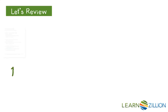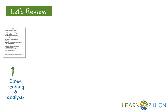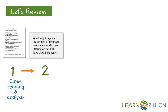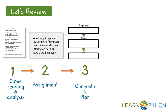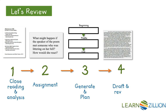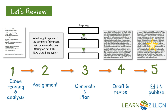The steps that we use in the writing process are: 1. A close reading and analysis of the text. 2. Read the assignment or writing prompt. 3. Generate and plan for our response. 4. Draft and revise our response. 5. Edit and publish our response for a final copy. In this lesson, we will continue working on step 4 in order to add details to show what the characters are thinking.